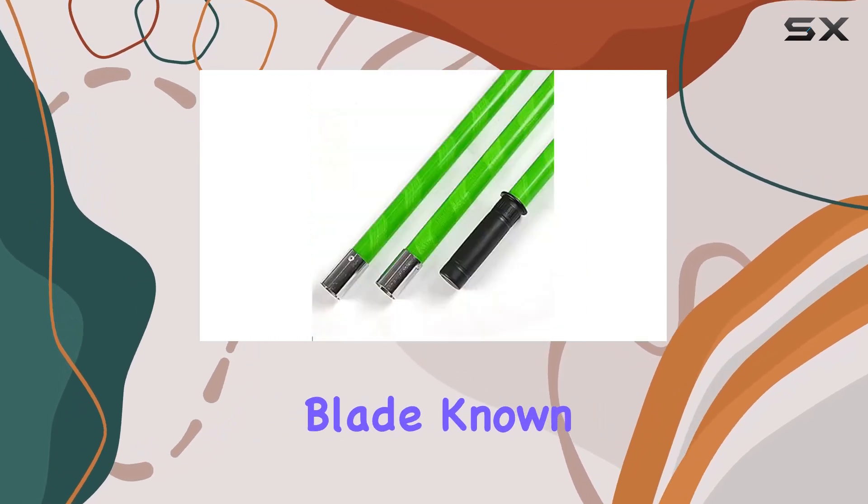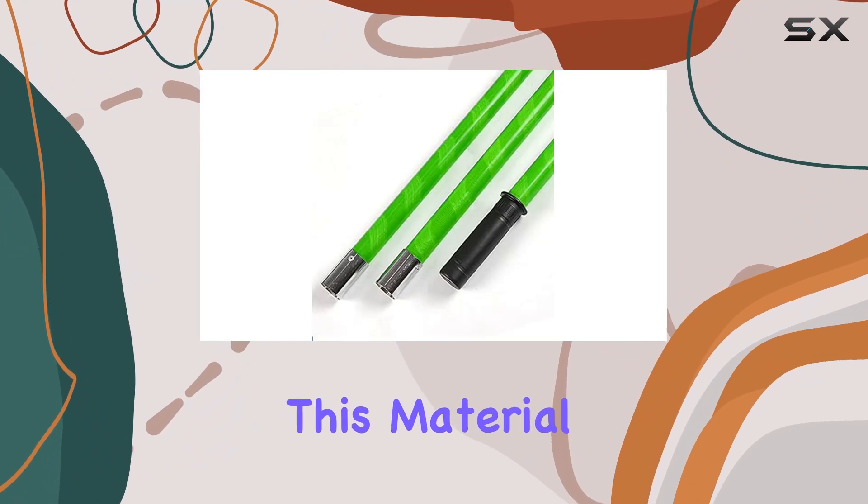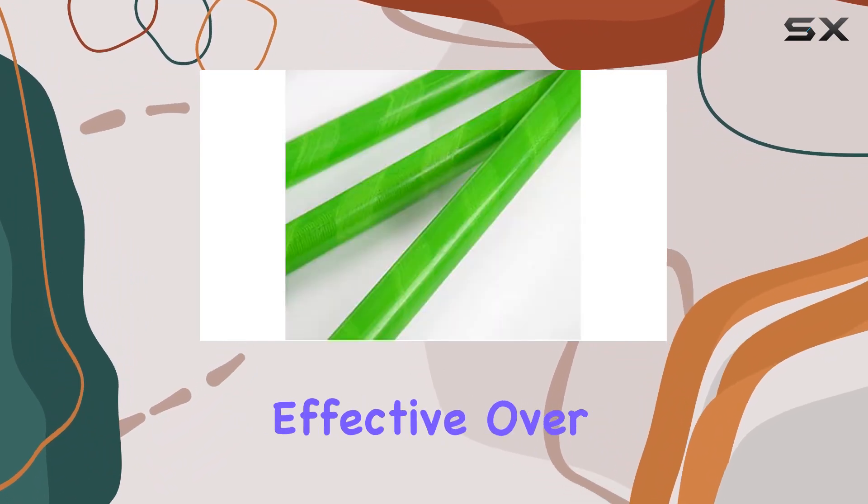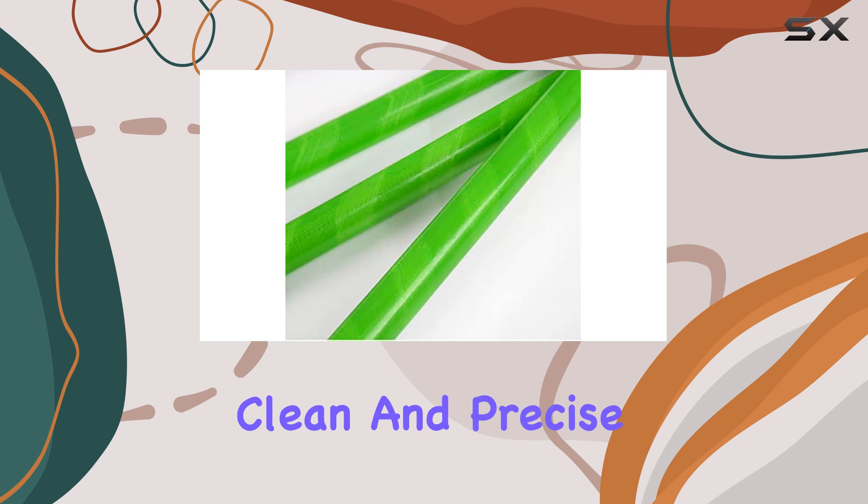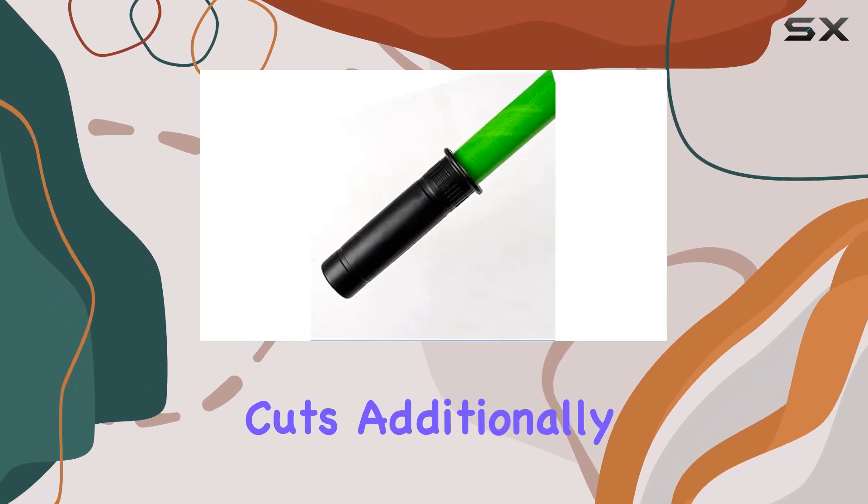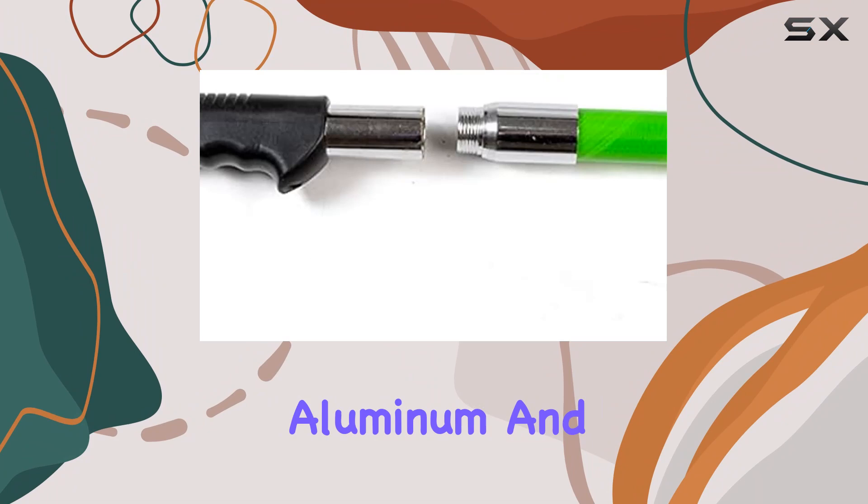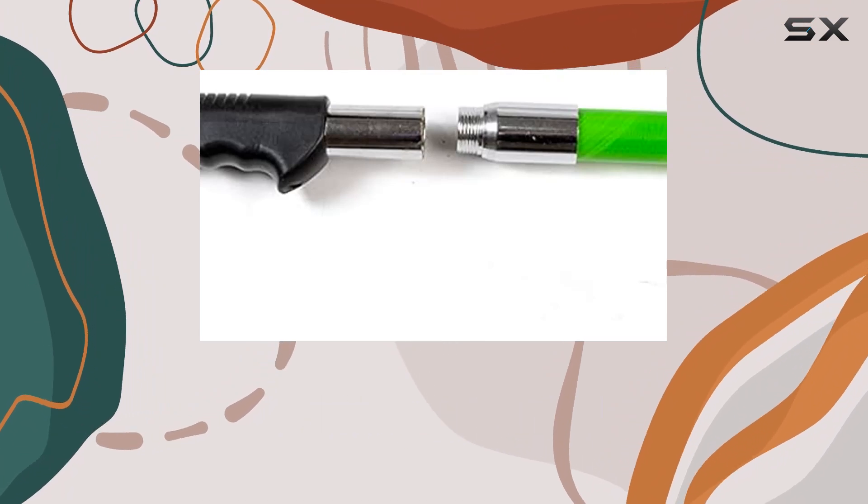This material ensures that the blade remains effective over time, providing clean and precise cuts. Additionally, the surface is recommended for use with aluminum and alloy steel, making it a versatile tool for different types of garden maintenance.